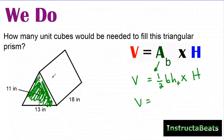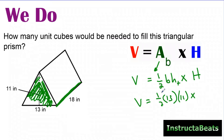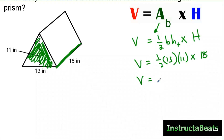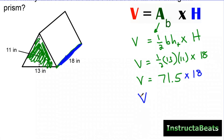So the first thing we want to do is figure out how many layers we're going to be able to fit over this triangle. I know my base is 13 — put that in parentheses. I know my height is 11 — that's the height of the triangle. And then I want to know the height of the entire triangular prism, which is how many layers of the area I need, so that's times 18. The area of the base of my triangle was 71.5. Now I multiply that by 18 layers. The volume of this triangular prism is 1,287 cubic inches.